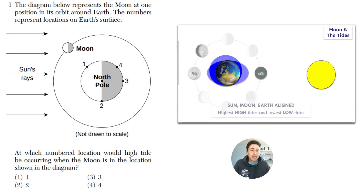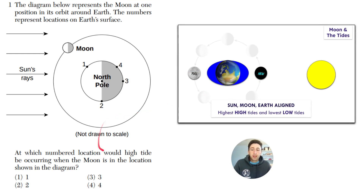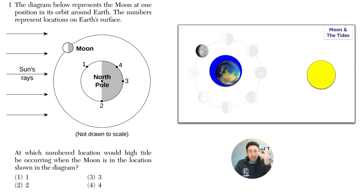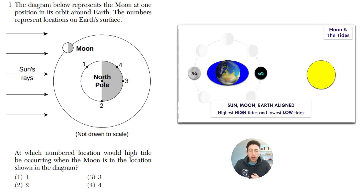The highest high tides and the lowest low tides on Earth occur when the moon and the sun are all aligned. This question is asking when the high tide would be. If the moon is at this location, the moon's gravitational pull will pull the water and make it high tide at that location — which is location one. So the answer to this question is going to be one.